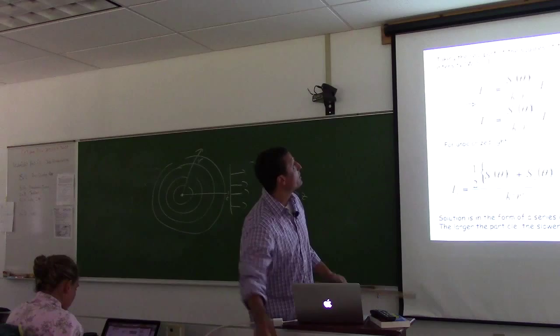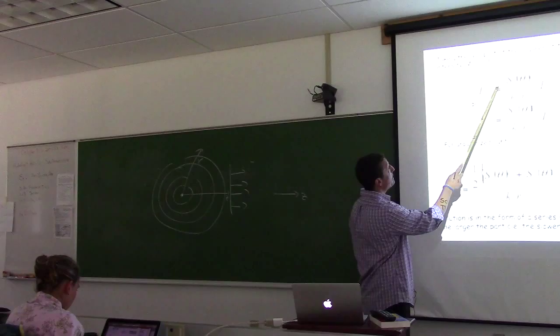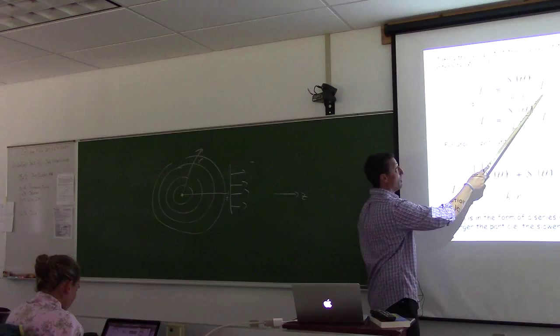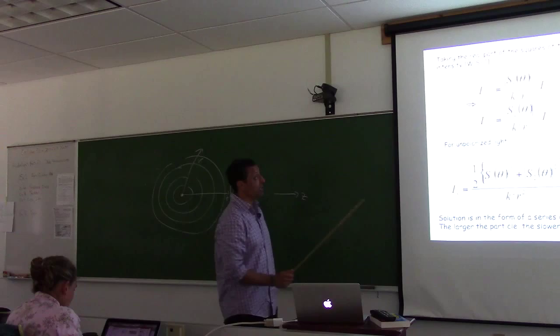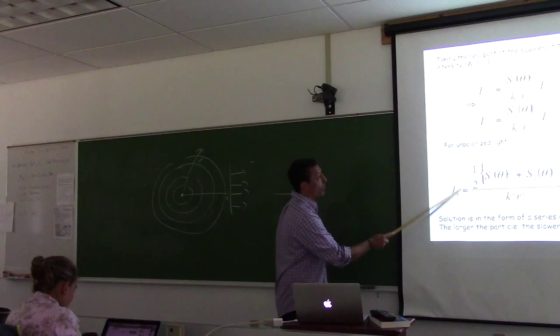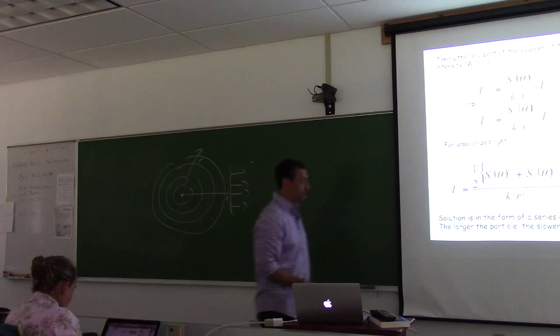We can talk about the intensity of the electric field in watts per steradian. It's related to that matrix, and related to the incident light with a specific polarization. Similarly, at the orthogonal axis, we can relate it to another element of the matrix. For unpolarized light, the full intensity relates to these two elements.